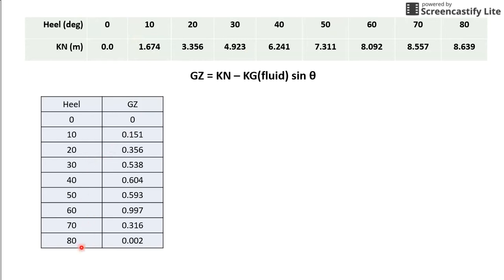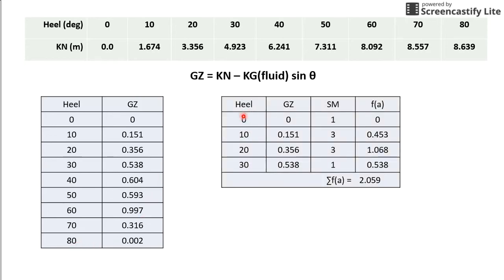So, 0 to 80 degrees. And since the question asks you to verify whether the condition satisfies the IMO requirement of the area under the righting lever curve should be not less than 0.055 meter radian up to 30 degrees. You have to do another table where you have the heel angle 0 to 30 degrees with their respective GZ values. And use Simpson multipliers to find the f(a).